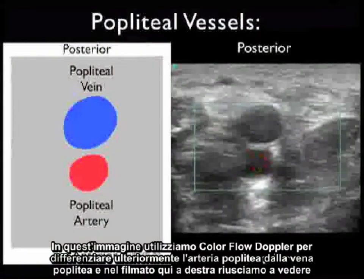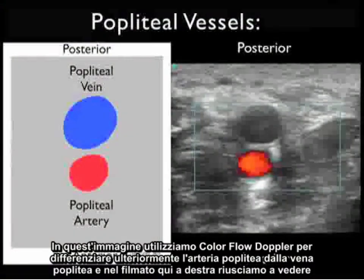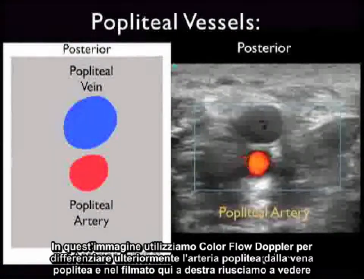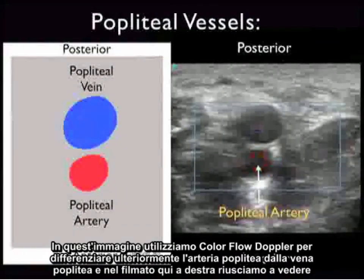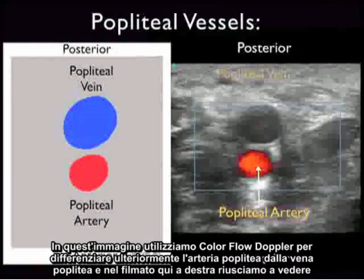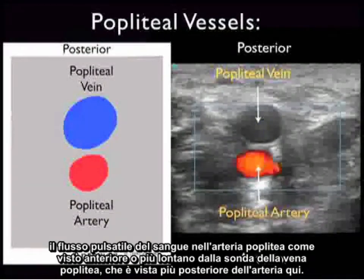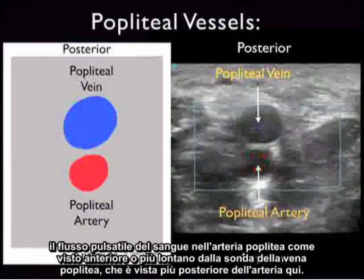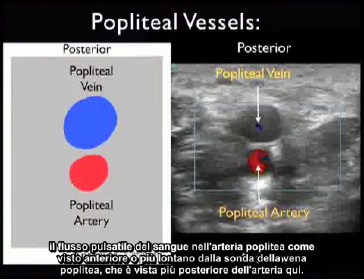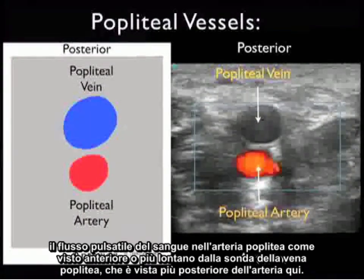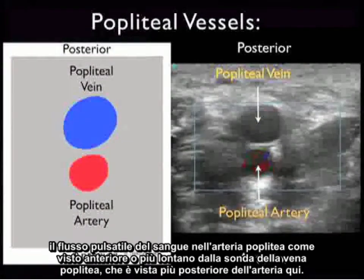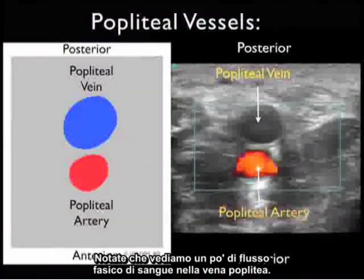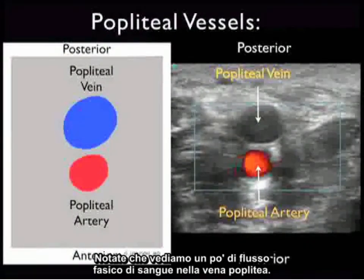In this image we'll use color flow Doppler to further differentiate the popliteal artery from the popliteal vein. In the video clip to the right, we can see the pulsatile flow of blood within the popliteal artery, seen anterior or further away from the probe than the popliteal vein, which is seen more posterior than the artery. Notice that we see a little bit of phasic flow of blood within the popliteal vein.